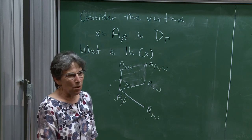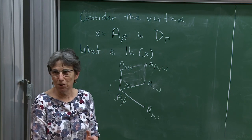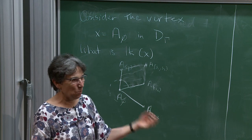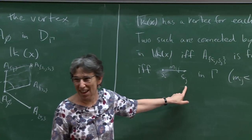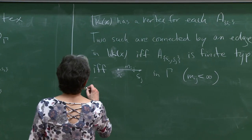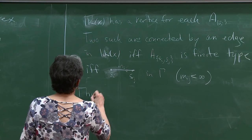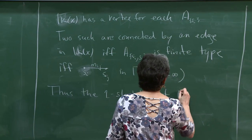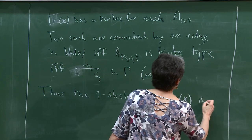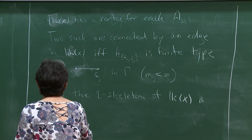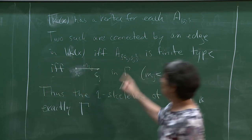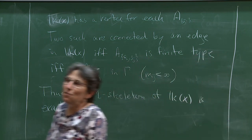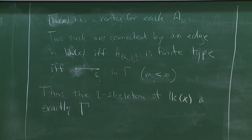We just constructed the one-skeleton of the link: one vertex for each s_i and one edge for each edge in γ. So the one-skeleton of the link of X is exactly γ — it can be identified with γ.